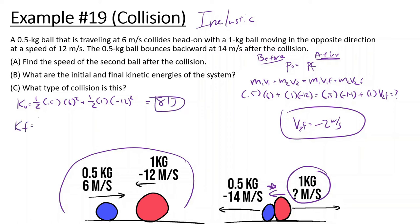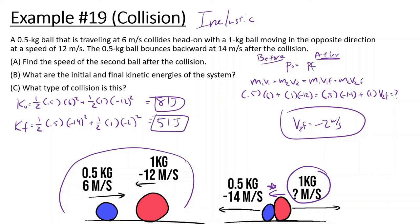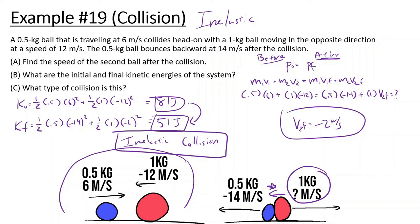After they collide, we have one-half times the mass of the first one, 0.5, times velocity negative 14 squared, plus one-half times the mass of the second one, 1, times negative 2 squared. Working that out — 14 squared times 0.5 plus 2 squared times 0.5 — we get 51 joules. We see that we lose energy, so this is an inelastic collision. If it had the same amount of energy before and after, that would mean it was a perfectly elastic collision.